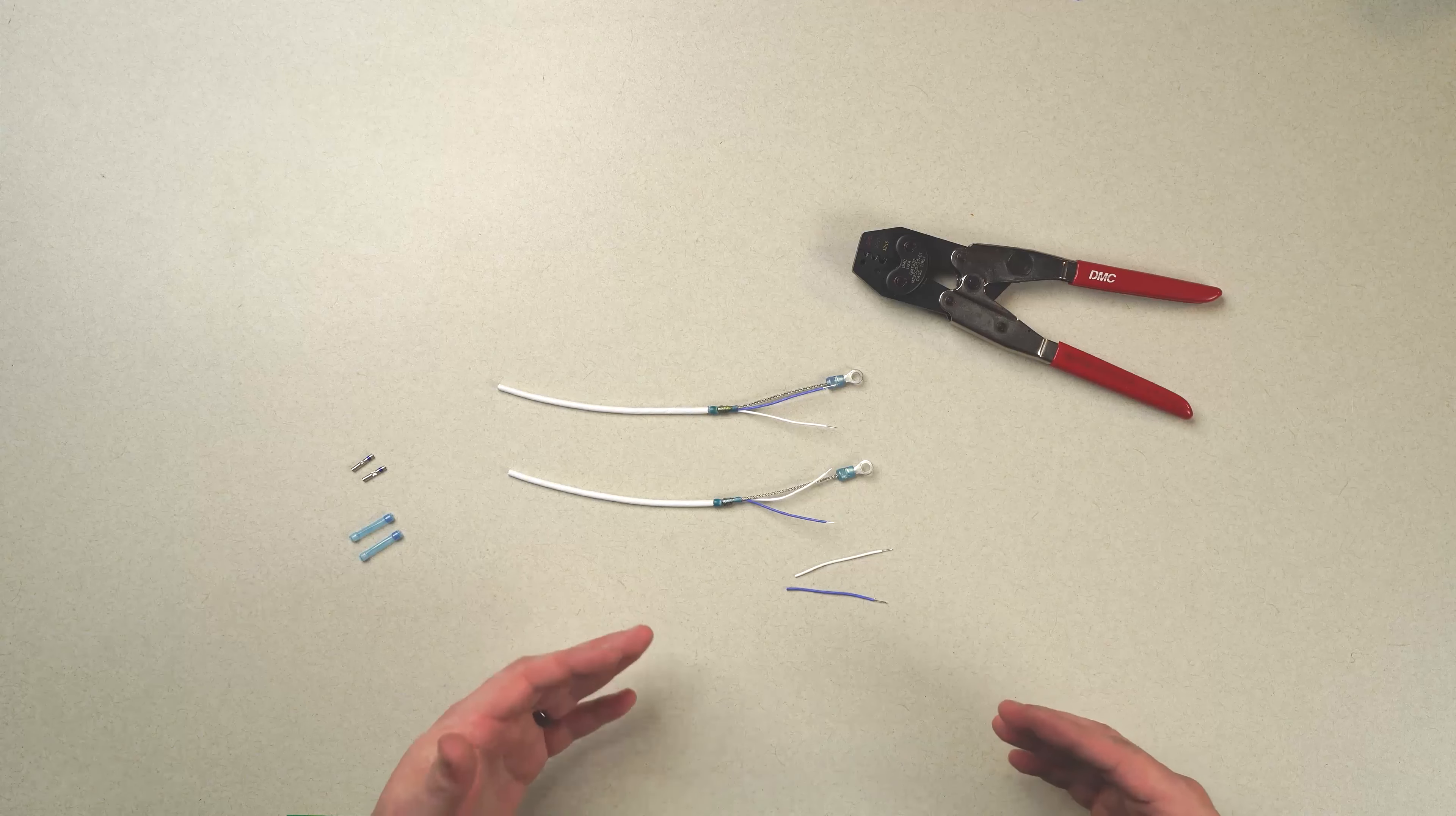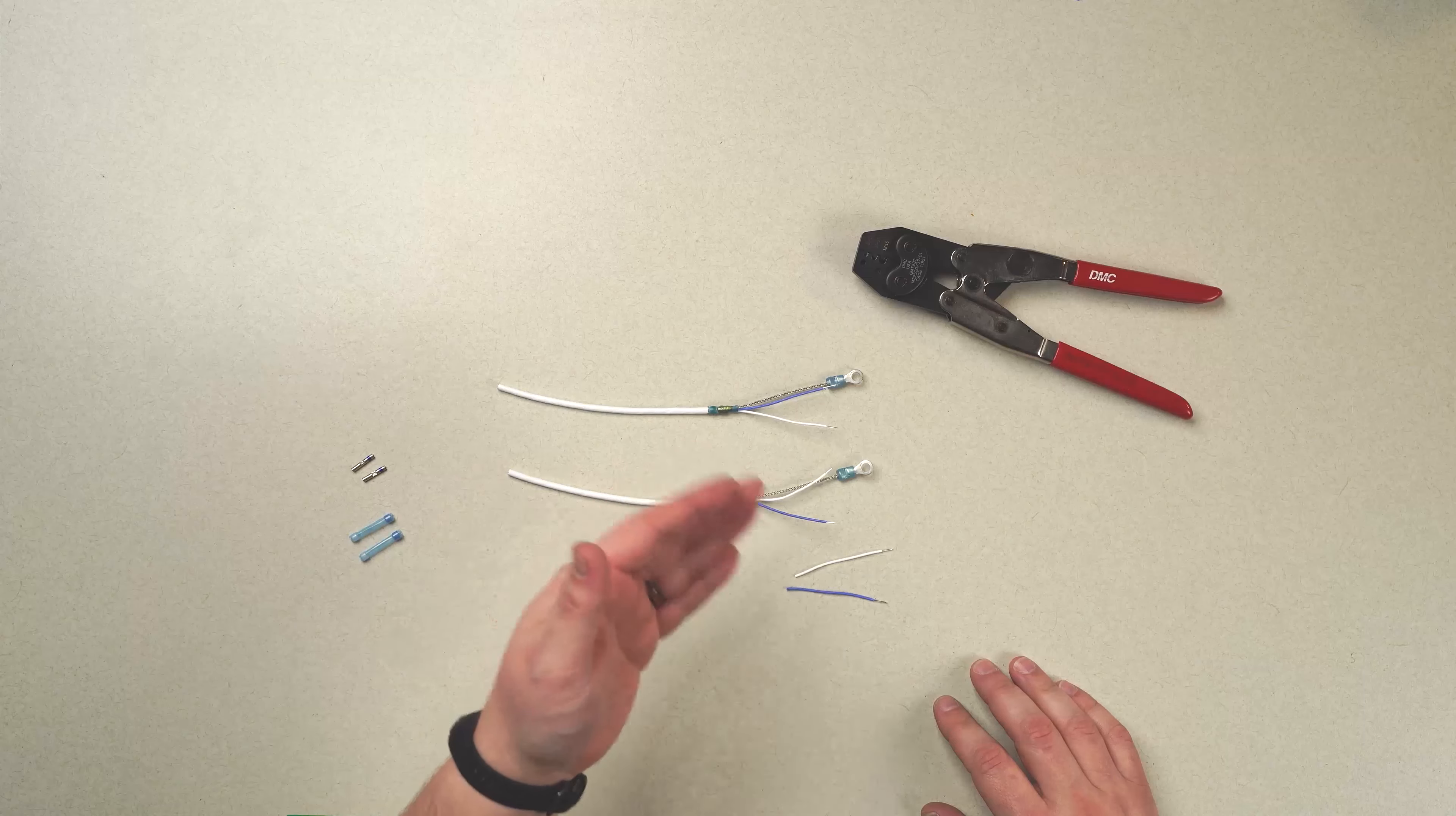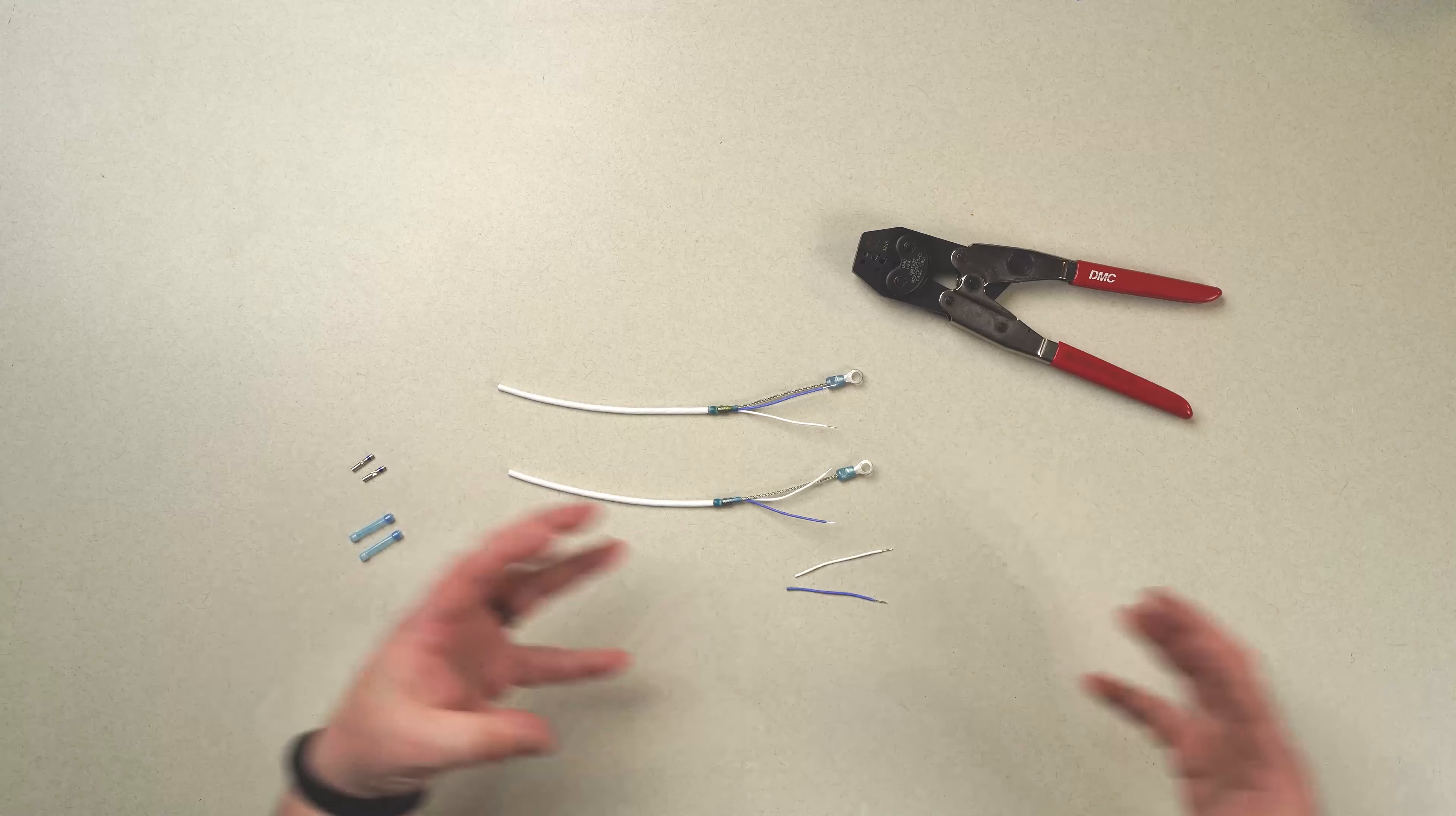Now that we have prepared our harness for wire splicing, we can take our splices, our lead wires, and our splice wires and bring them all together.